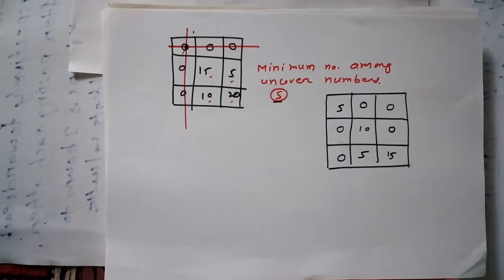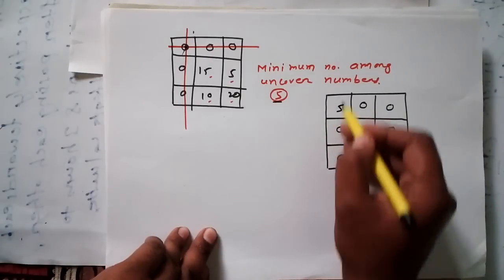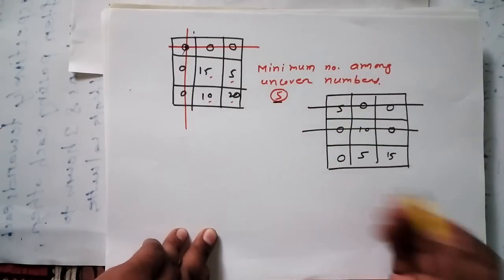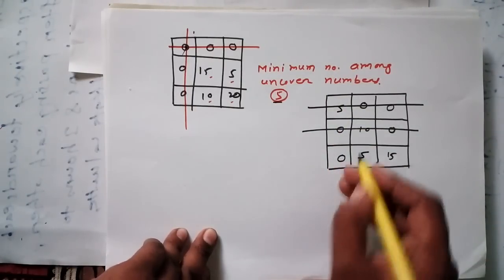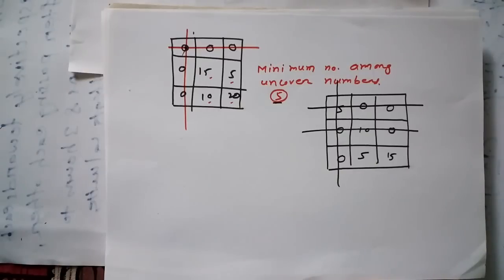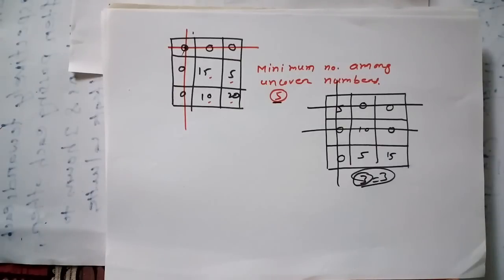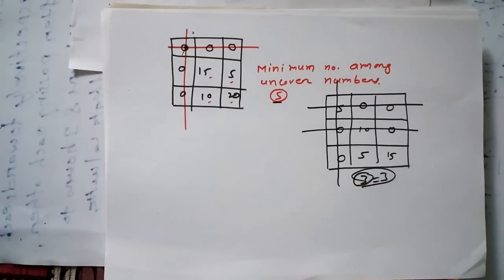Now we again use the minimum number of lines to cover all zeros. We draw lines through the rows and columns with the most zeros. This time, three lines are needed, and since our matrix is 3×3, the condition is satisfied — the number of lines equals the matrix order. We can now move to the final assignment step.